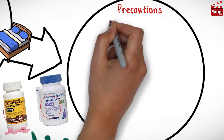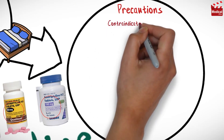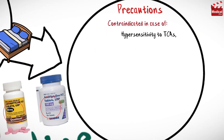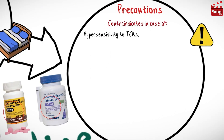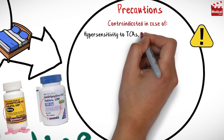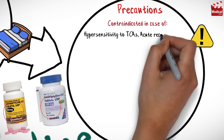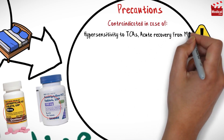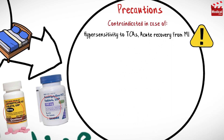Amitriptyline is contraindicated in cases of hypersensitivity to tricyclic antidepressants, acute recovery from myocardial infarction, and concurrent use of MAO inhibitors.